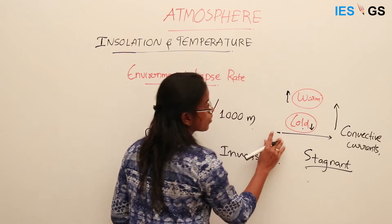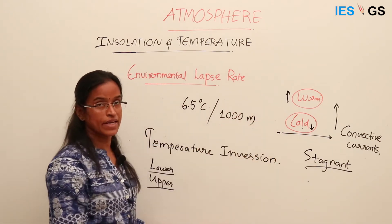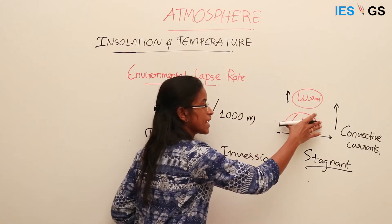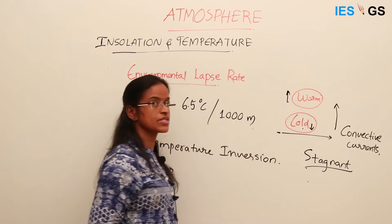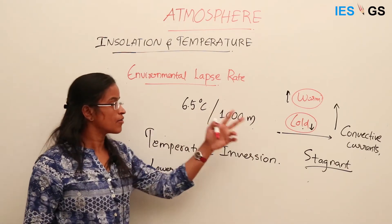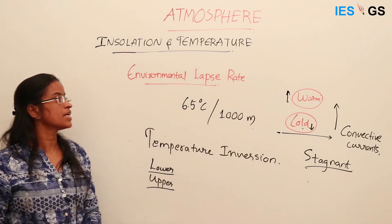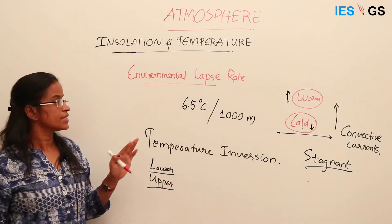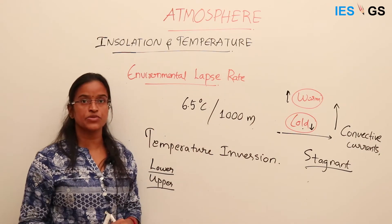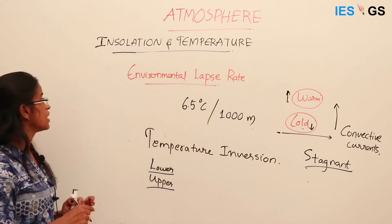There are no vertical movements happening. The air remains at the surface for a longer time. Now, how does temperature inversion happen? There can be different reasons for temperature inversion.